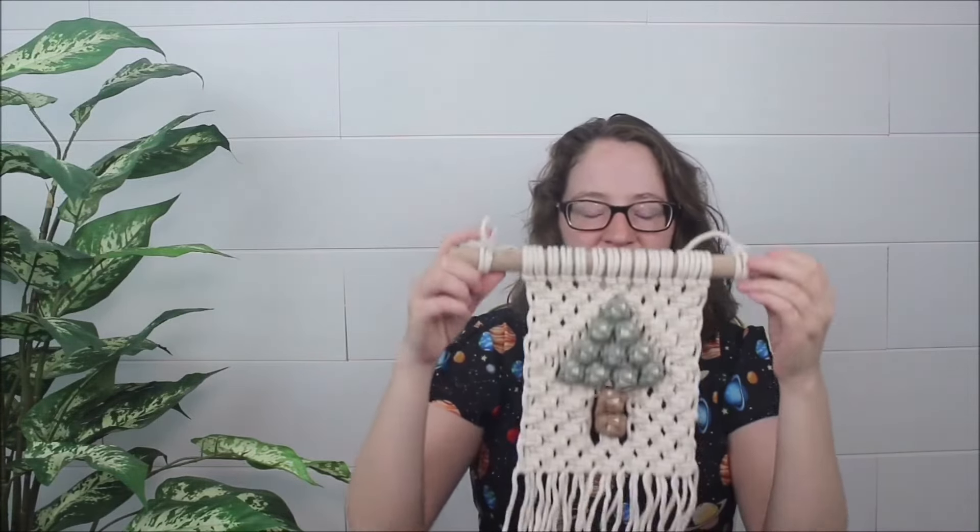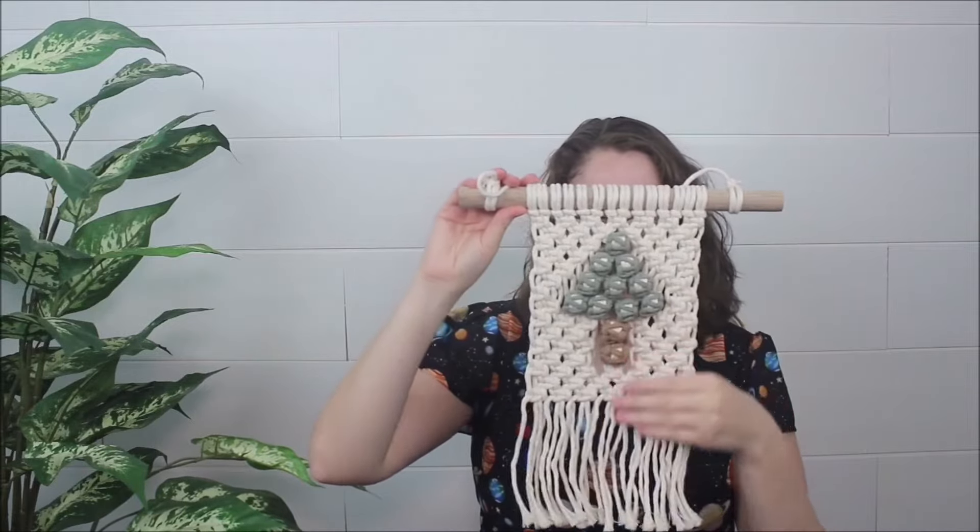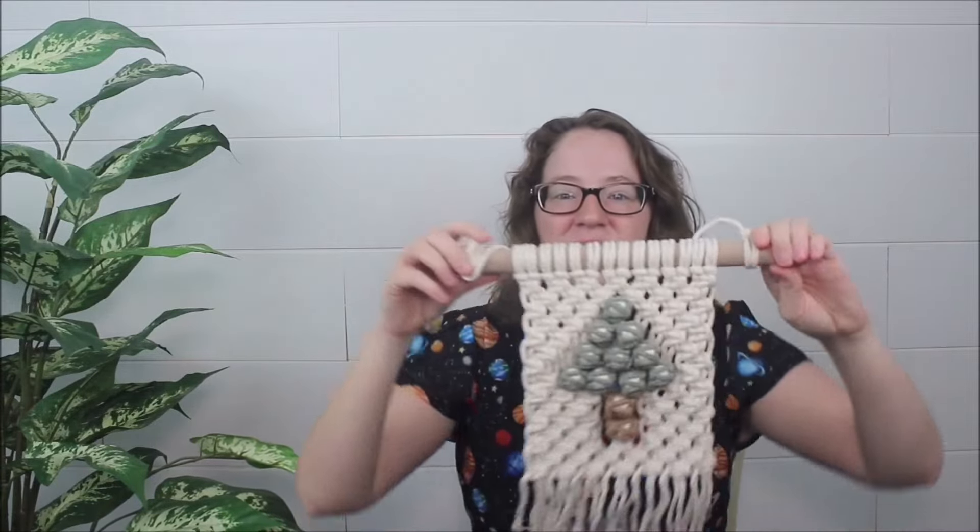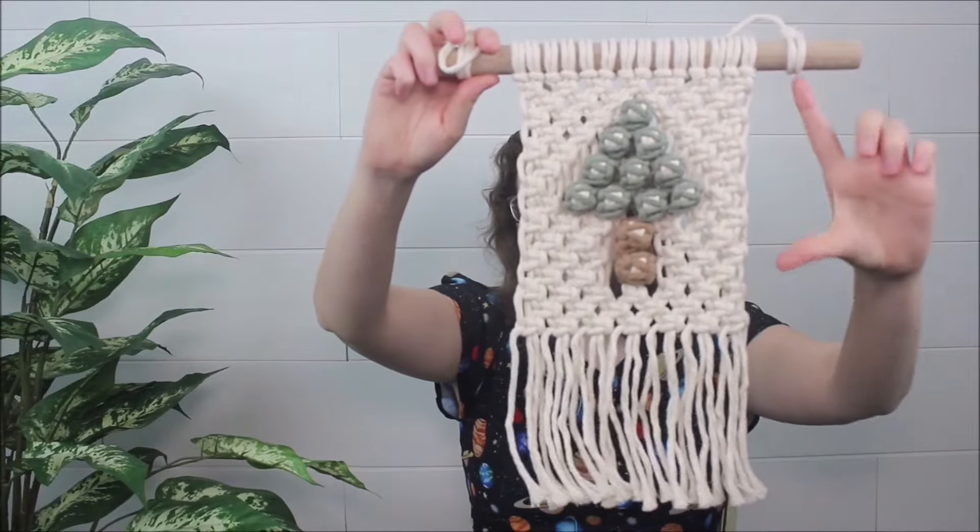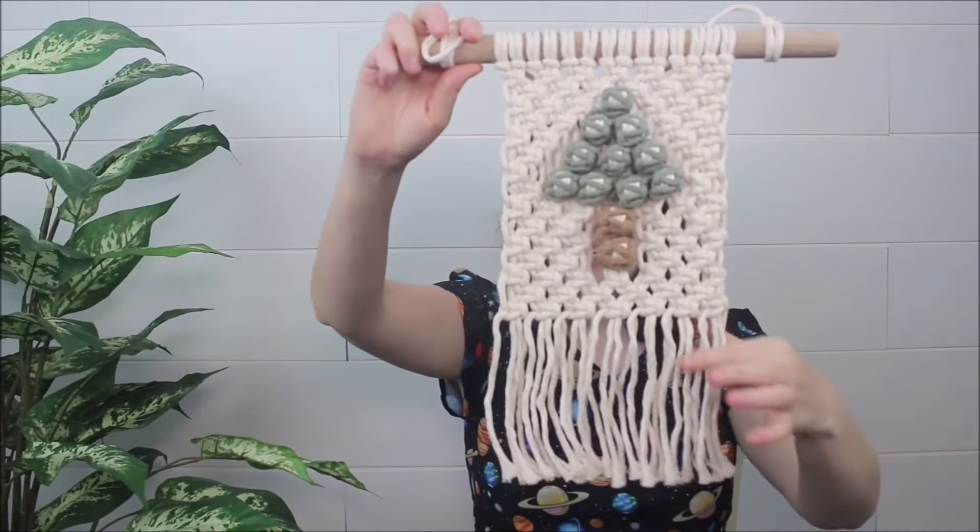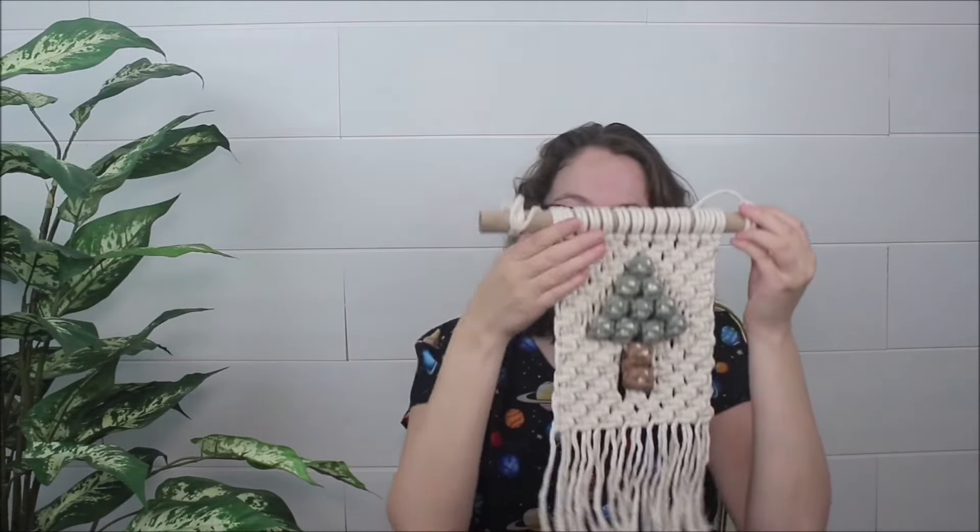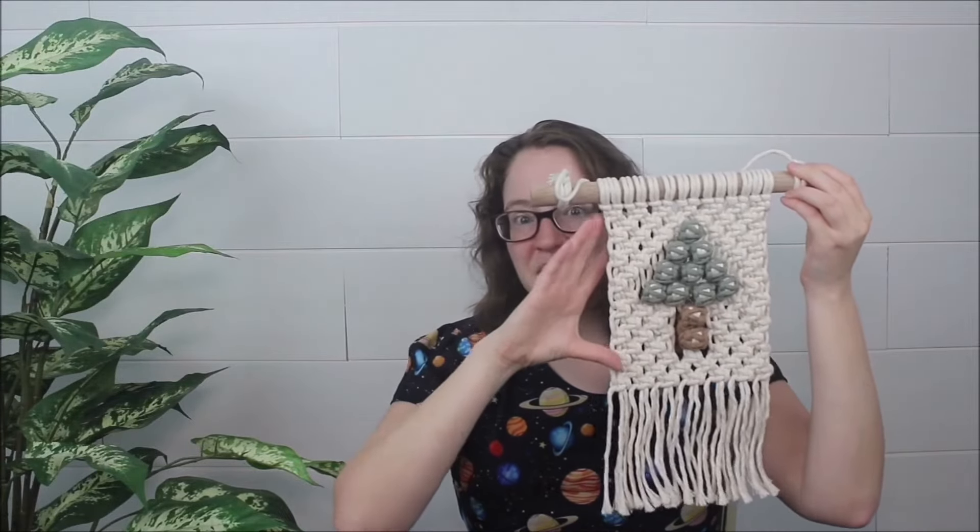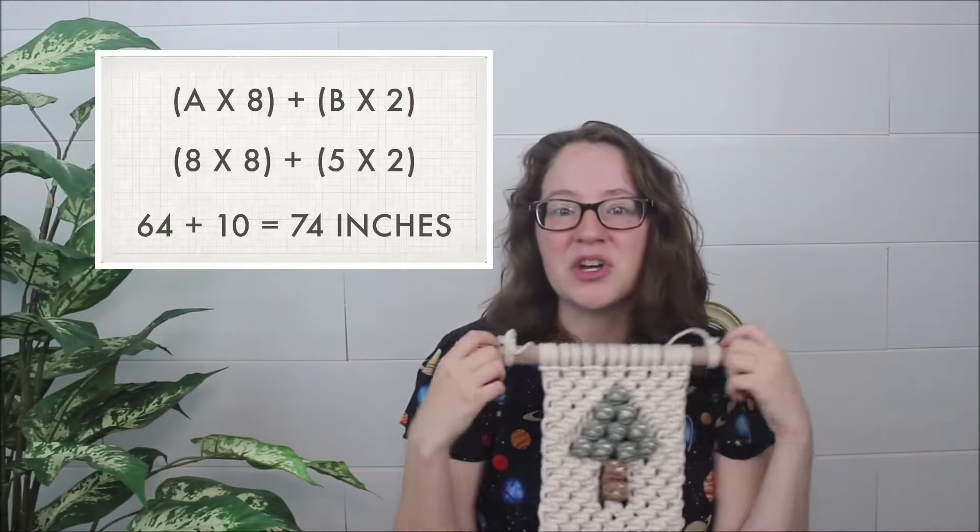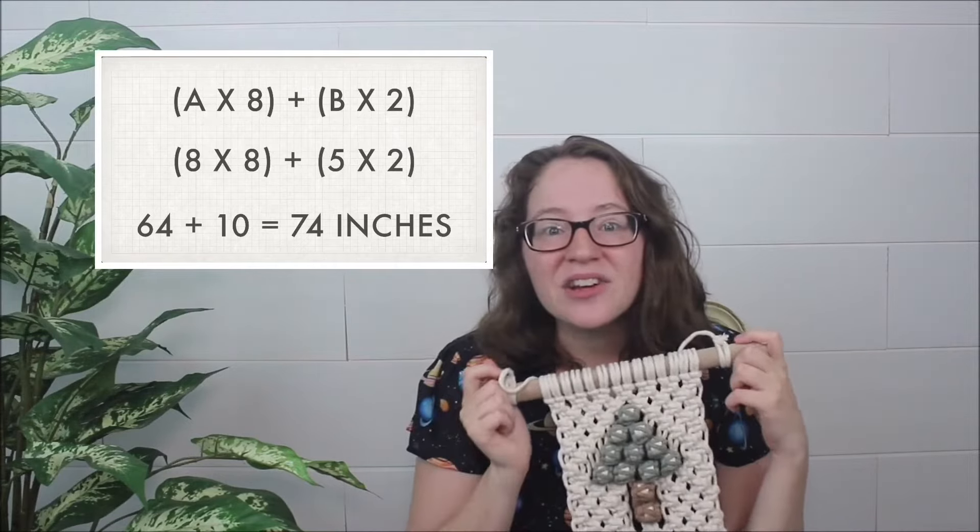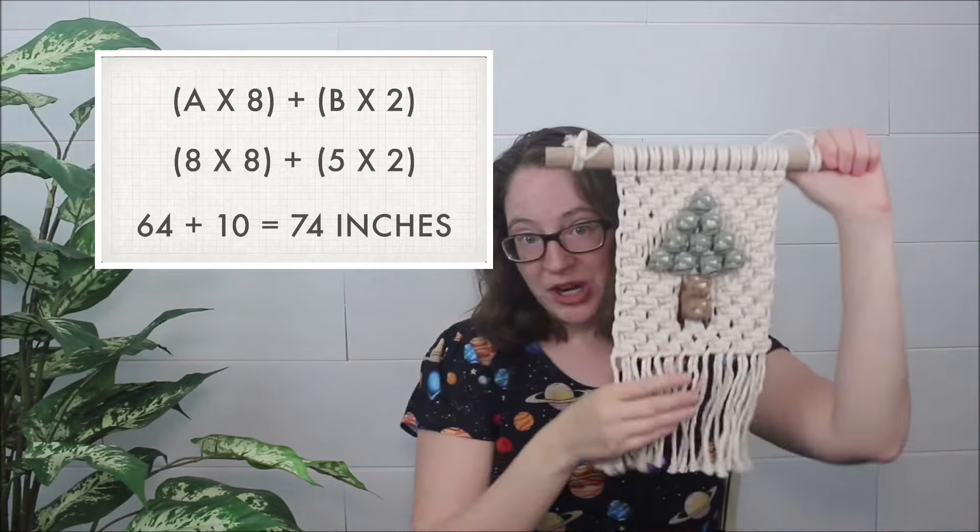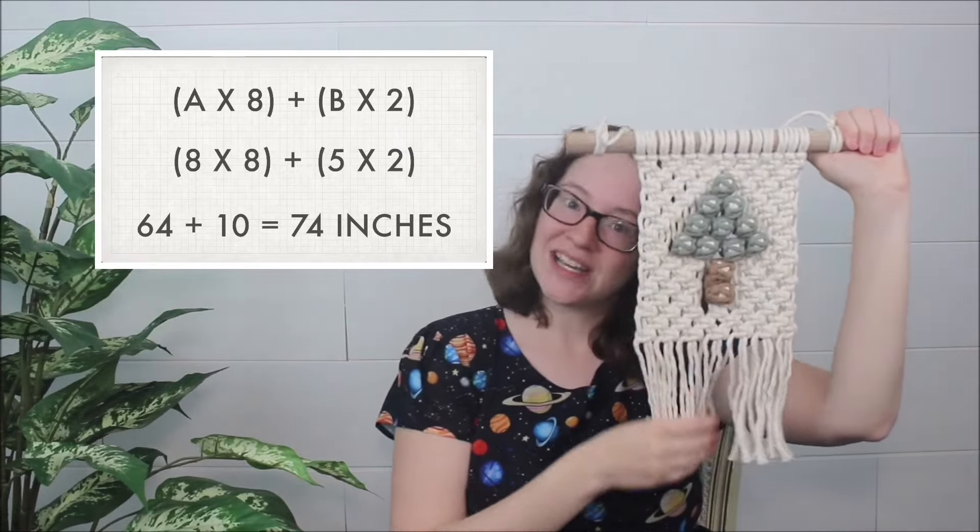So let's break this down again with this example of this wall hanging that I have made. In this wall hanging, I have a clear knotted section and a clear section of fringe. So in this wall hanging, my total wall hanging is 13 inches long, with that knotted section being 8 inches and the remaining fringe being 5. So plugging those numbers into the equation and then adding everything together, I should have cut my ropes for this project 74 inches long.